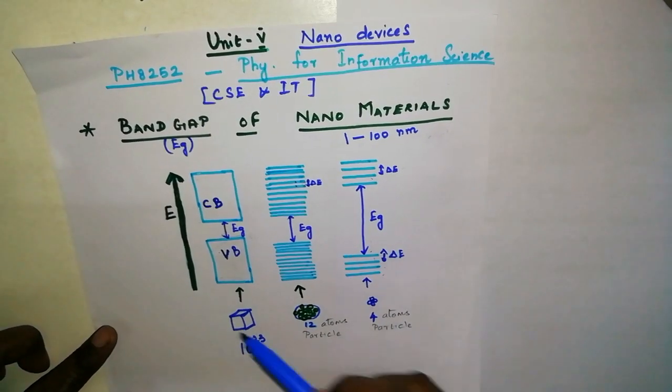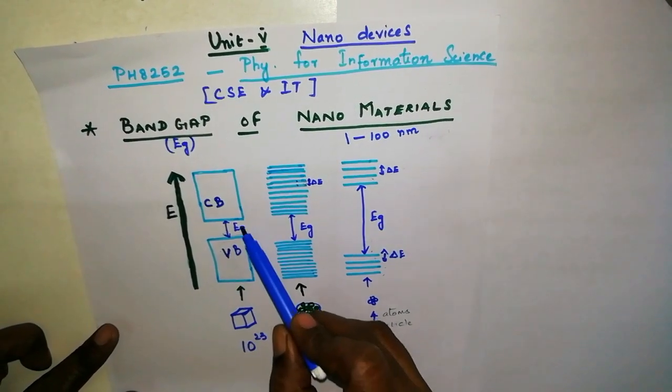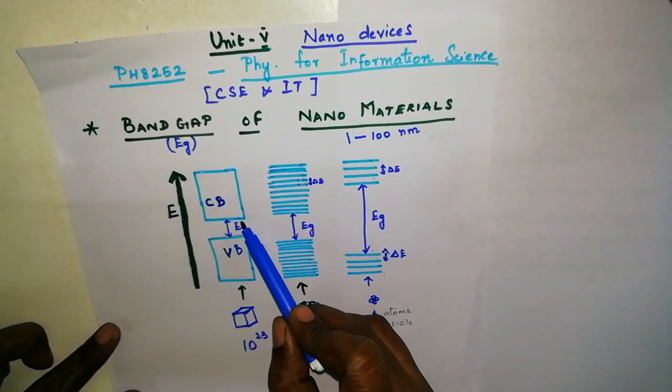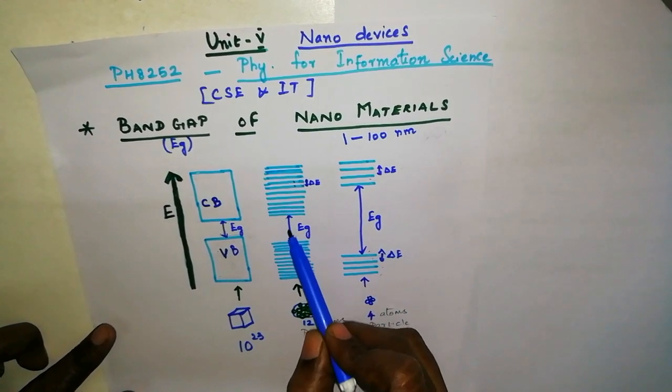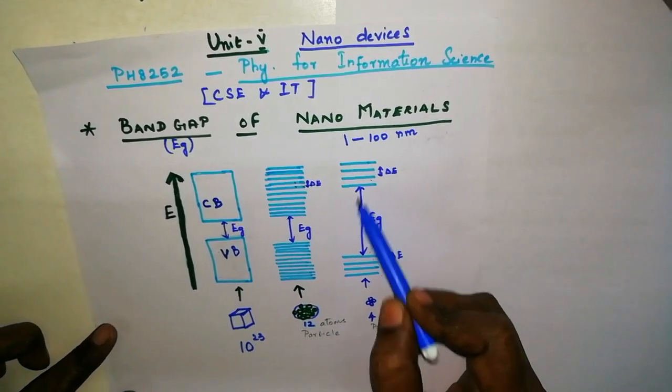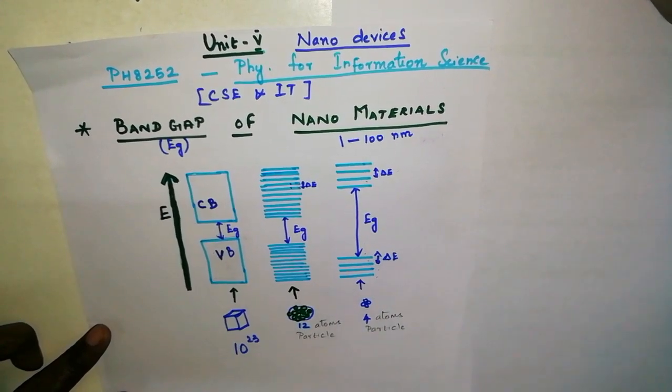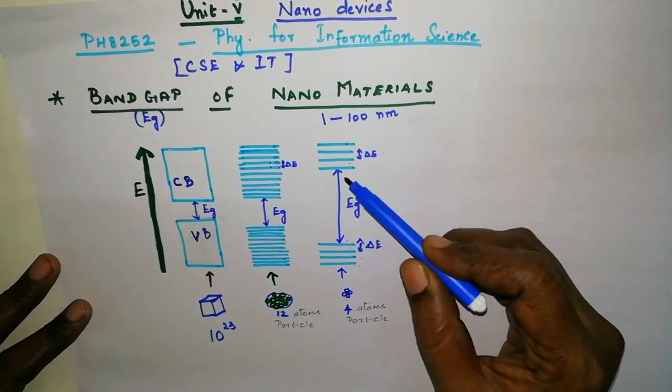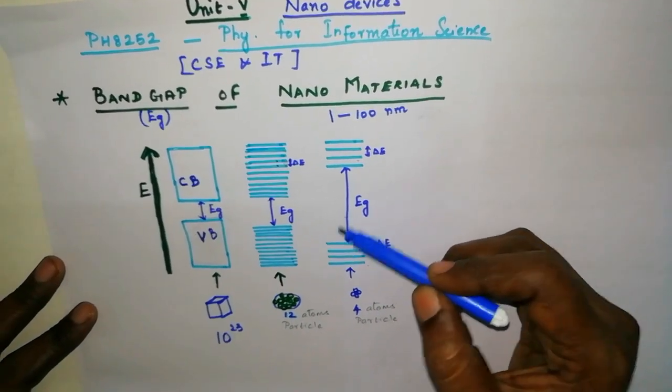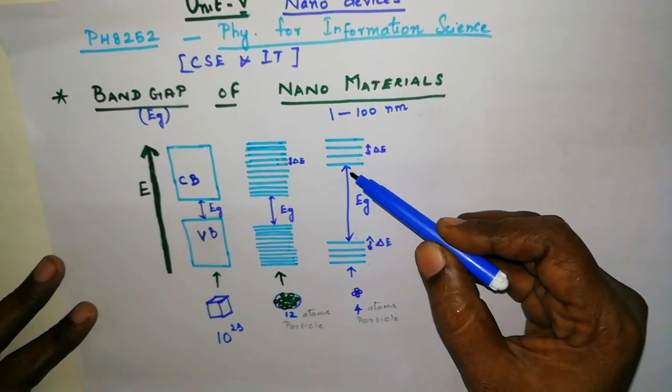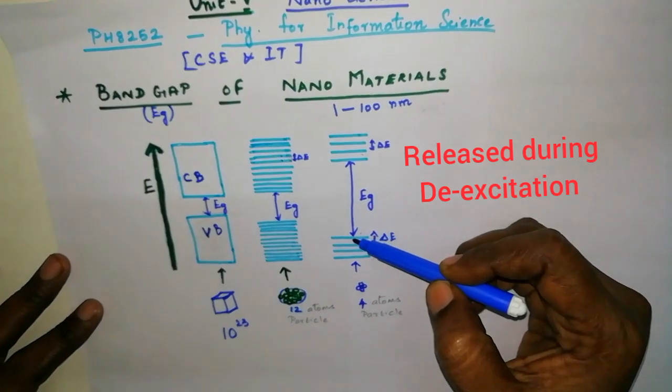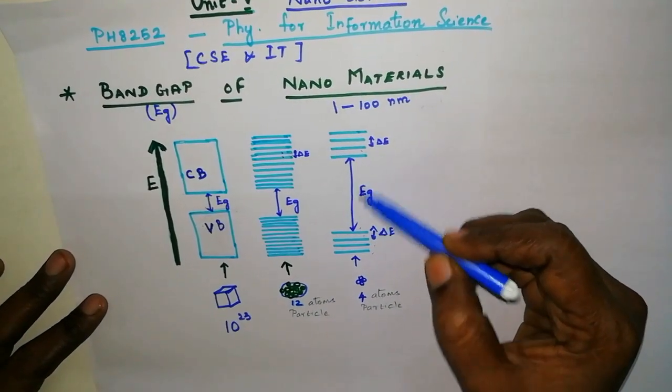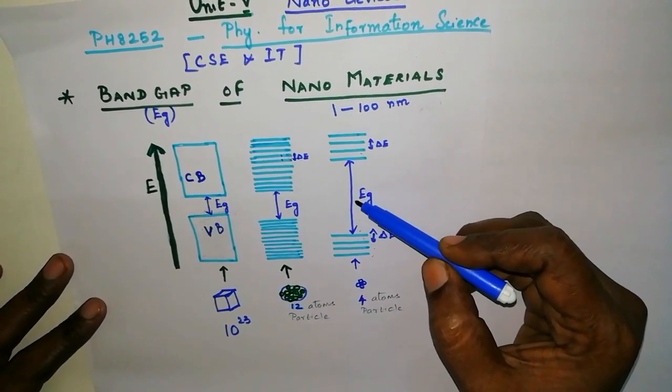Thus, in large volume bulk material, a small band gap is present and when its volume gets reduced, its band gap increases. When the electron is excited or de-excited across the band gap, the energy absorbed during excitation and released will be equal to the band gap energy of the material.